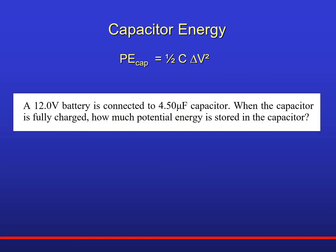Let's just do a quick problem. A 12 volt battery is connected to a 4.50 microfarad capacitor. Remember this capital F stands for Farad. Micro stands for 10 to the minus 6. This 4.5 microfarad is the capacitance, that capital C, of this device. When the capacitor is fully charged—fully charged means it reaches equilibrium, it takes time to move those electrons around—when it's fully charged, when it's reached equilibrium, how much potential energy is stored in the capacitor?